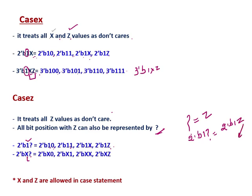So this z can be 0, 1, x, and z. In this case the question mark represents z, so x is not going to be changed — the x is fixed. The x can be 0, it can be 1, it can be z, or it can be x, but only the z part is going to be changed. So 2bx? is equivalent to 2bx0 through 2bxz.